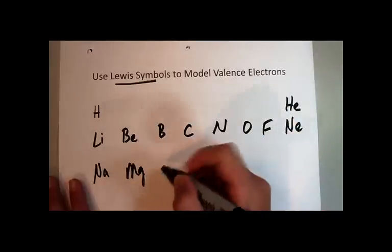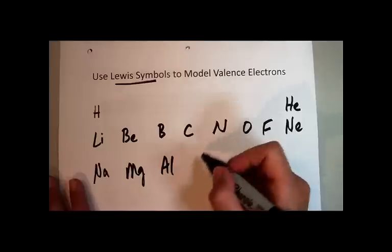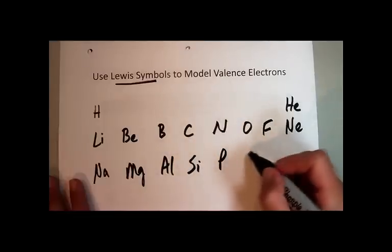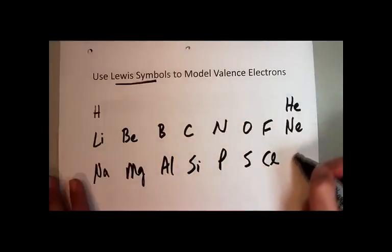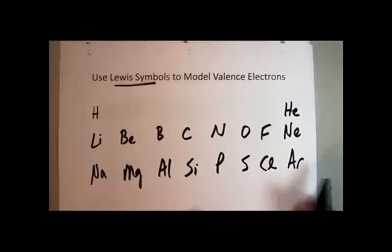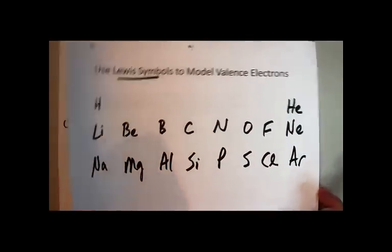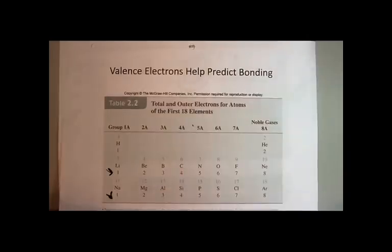Magnesium—you should be familiar with all these names and symbols—aluminum, silicon, phosphorus, sulfur, chlorine, and argon. If I correlate that to this little chart that was just right here, I'm going to draw Lewis symbols indicating the valence electrons.